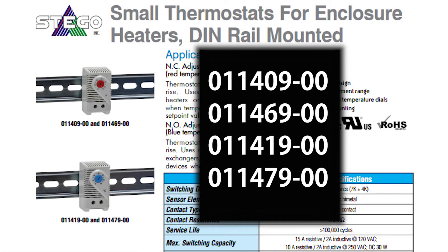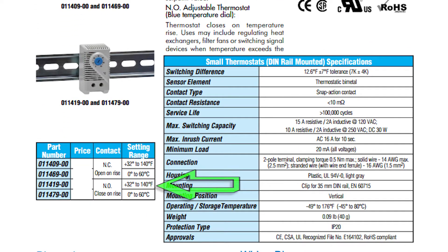The small thermostats we will cover in this video are listed on the screen. These four thermostats have adjustable temperature settings with ranges of 32 degrees Fahrenheit to 140 degrees Fahrenheit in normally open or normally closed configurations and versions in 0 degrees Celsius to 60 degrees Celsius in normally open or normally closed configurations.